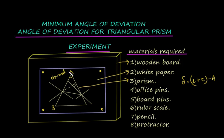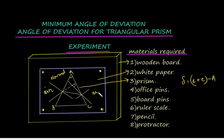Let us mark the sides of the prism as A, B, and C. Angle A is the angle between the two refracting surfaces. In the case of a prism we use the term deviation of the ray, whereas in the case of a glass slab we use the term refraction. This is because two surfaces are involved and they are at an angle — the ray undergoes deviation twice. This is rarer medium air on both sides, and the material of the prism is glass.